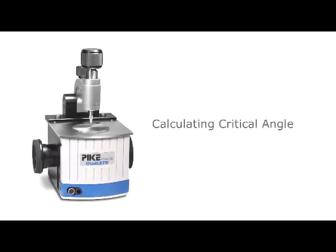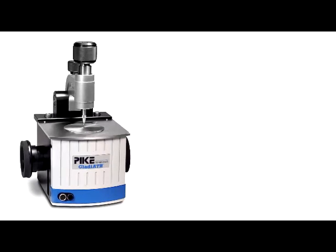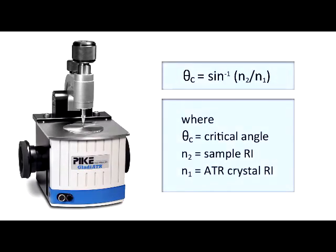ATR sampling requires that the accessory's angle of incidence is greater than the critical angle, which is defined as the inverse sine of the ratio of the sample and crystal refractive indices.